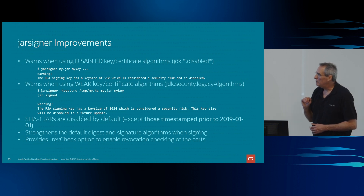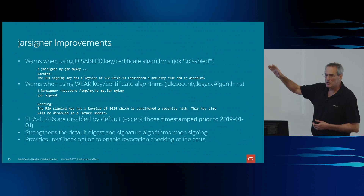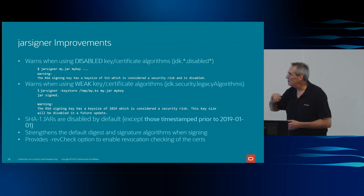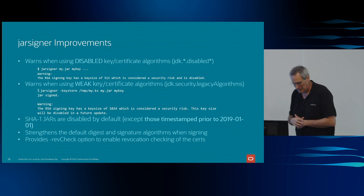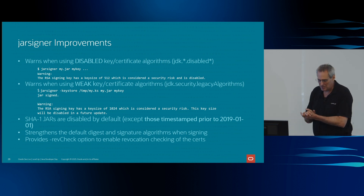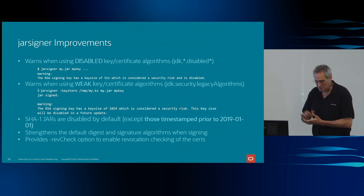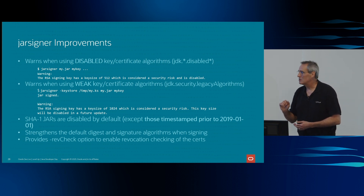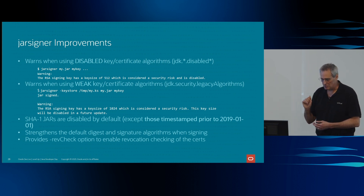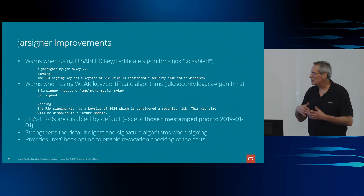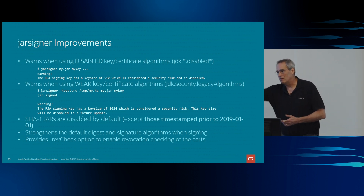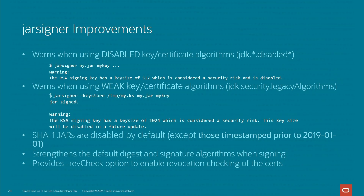Similarly for JarSigner, it will give a warning when you try to use a disabled algorithm, or indicate if it is considered legacy. If you use JarSigner without specifying an algorithm name, it will use the current default value. We have also added the ability to check certificate revocation status. You can use the rev-check option to direct JarSigner to verify that the revocation status of the certificate you want to use is still valid — it goes out to the certificate database, checks whether it is still valid, and then proceeds with signing.